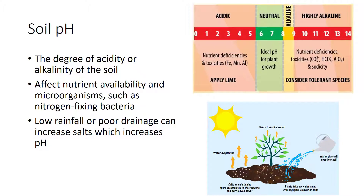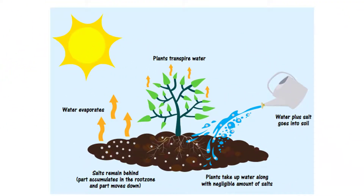Soil pH is the degree of acidity or alkalinity of the soil. The pH of the soil affects nutrient availability and should be maintained in the proper range to maximize crop yields. For example, nitrogen is most available between pH 6.0 and 8.0. As the soil becomes more acidic or more alkaline, the availability of nitrogen is reduced. In addition, nitrogen-fixing bacteria called rhizobia work best in the pH range between 6.0 and 8.0. When the soil experiences low rainfall or is poorly drained, salts generally accumulate and lead to an increase in soil pH.